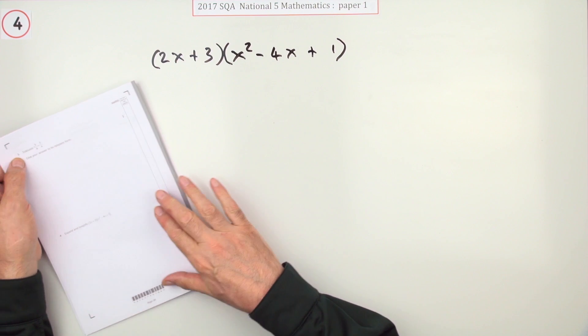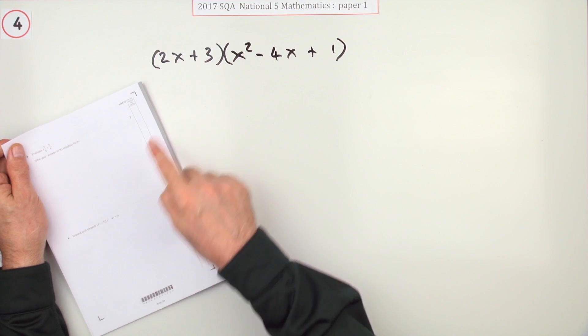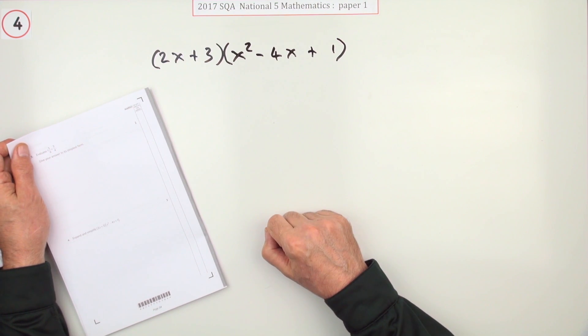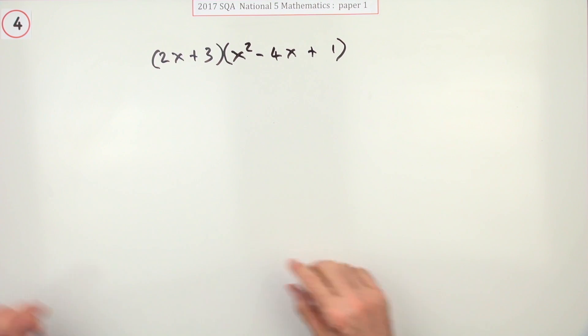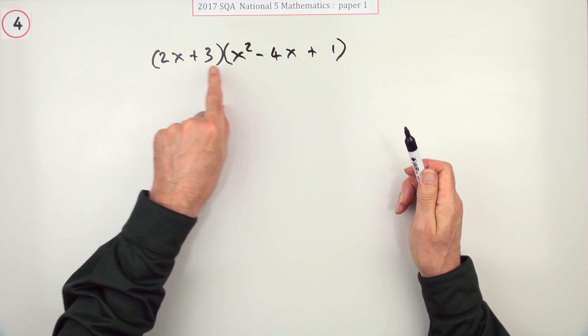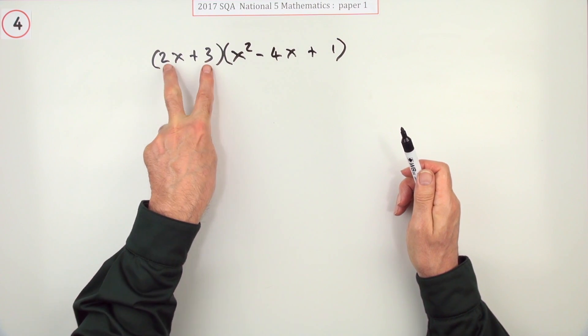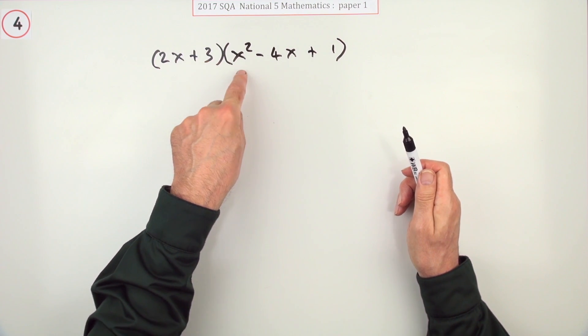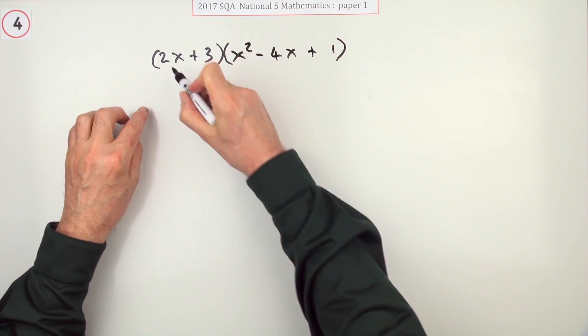Number four, moving up to three marks here, expand and simplify this. Well, a bracket multiplying a bracket means everything in this bracket gets a turn multiplying this.